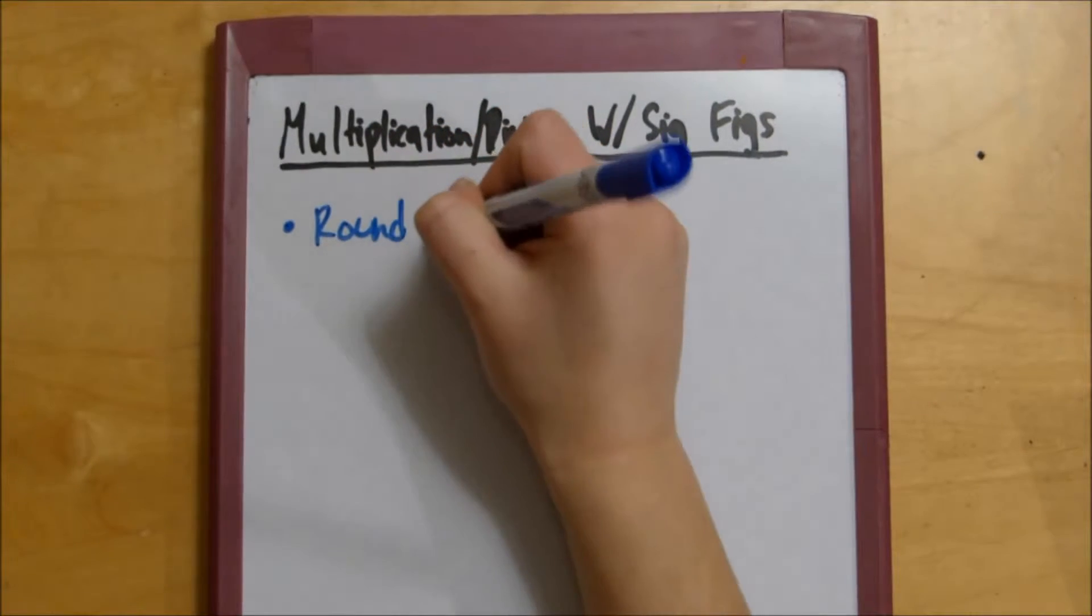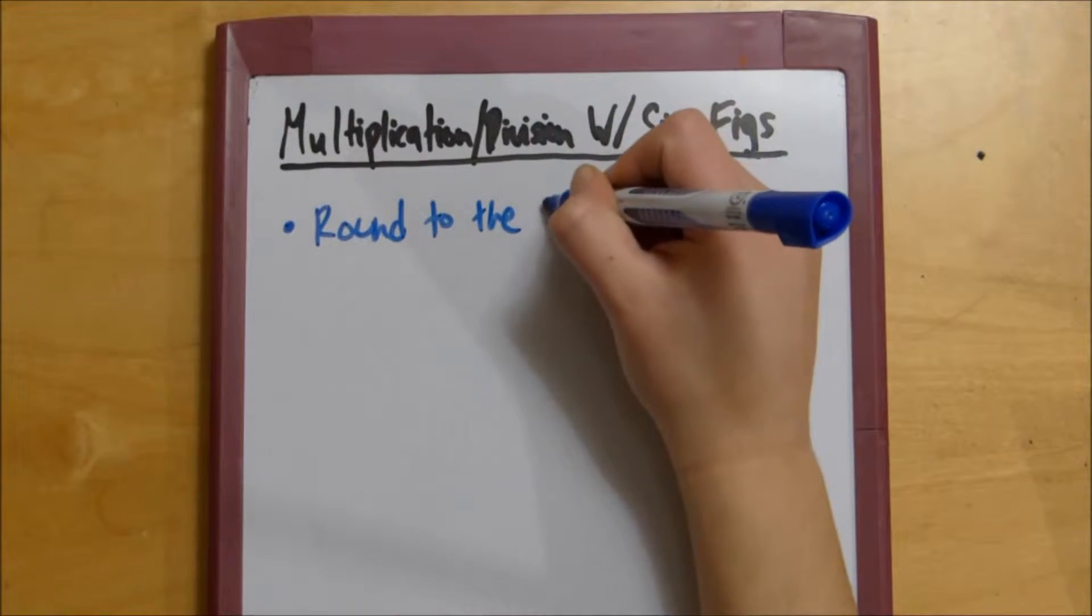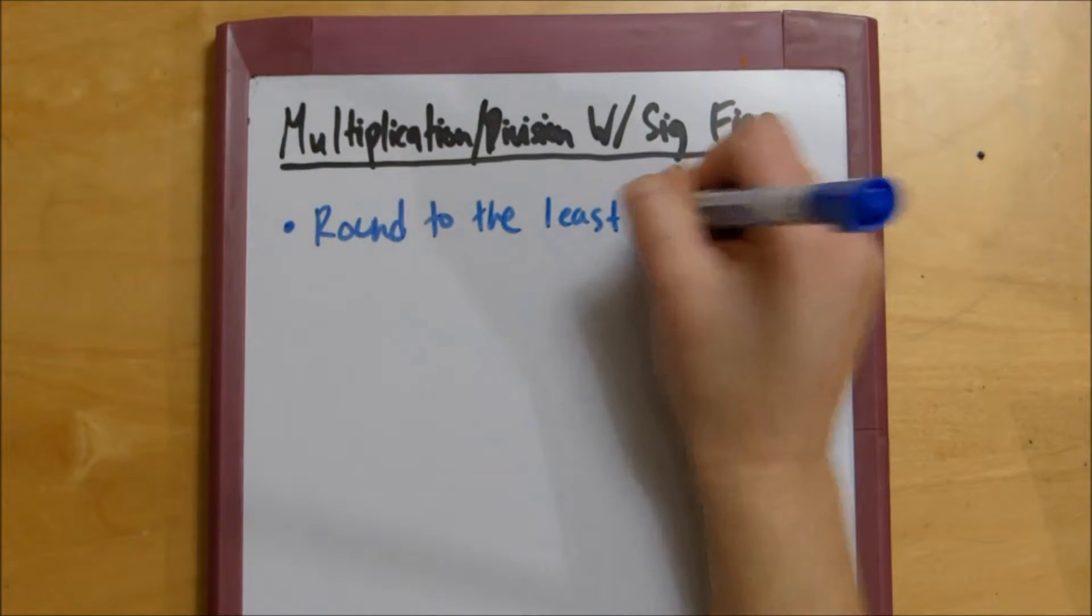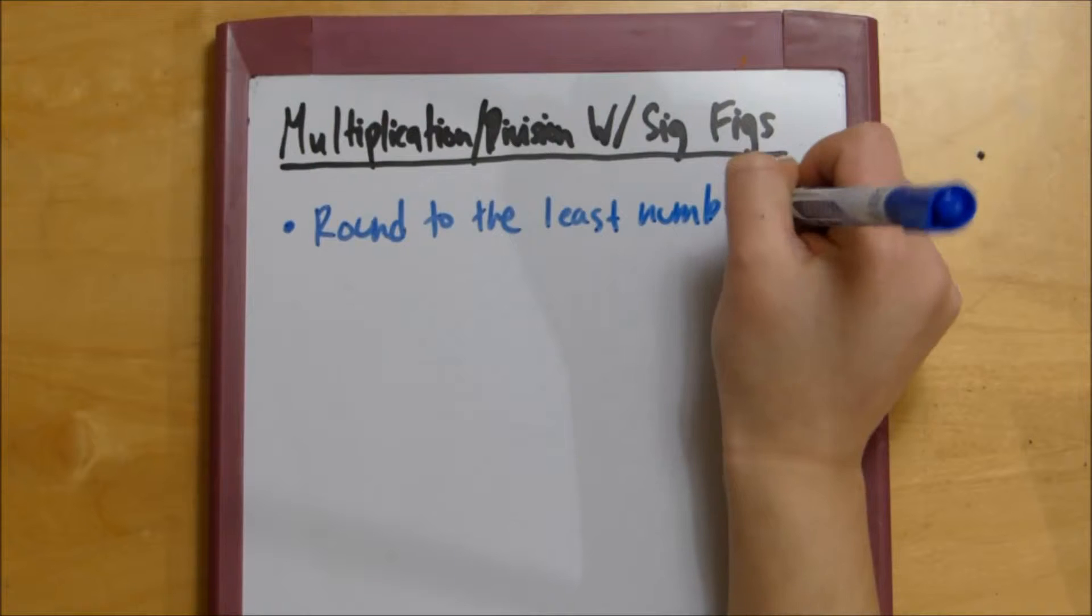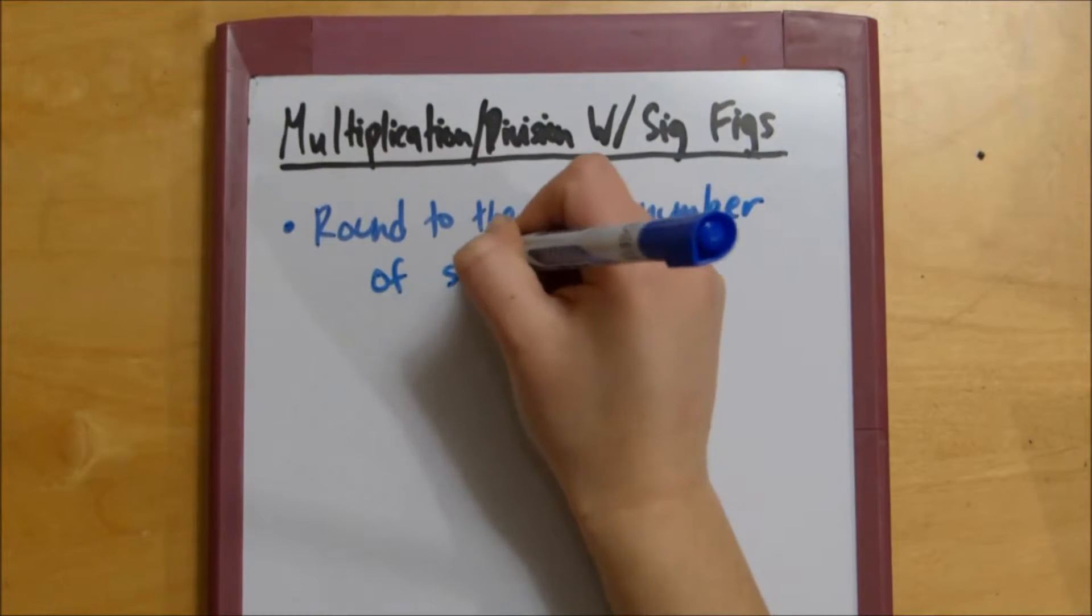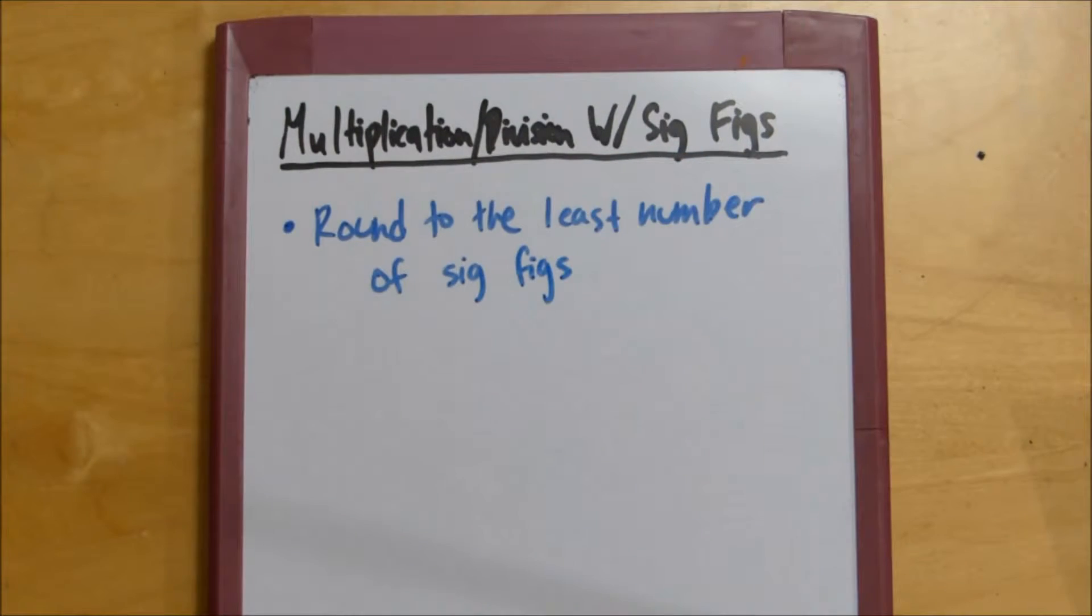you round to the least number of sig figs. It's an important distinction between the two.